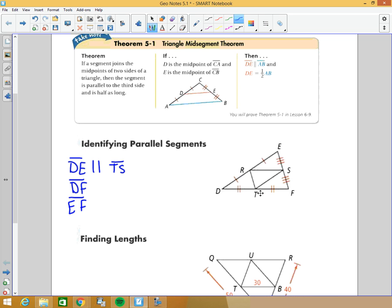Then DF is parallel to RS—excuse me, not congruent, parallel to RS, I misspoke. So DE is parallel to TS, DF is parallel to RS, and EF is parallel to RT.